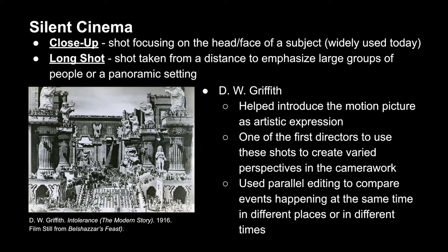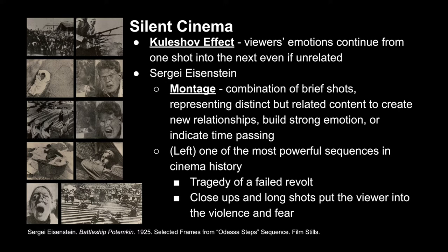Griffith also used parallel editing to compare events happening simultaneously in different places or at different times. Cinema relies on the fact that the viewer's emotions continue from one shot into the next even if they're seemingly unrelated — this is called the Kuleshov effect. Often this is used when shifting from a close-up to whatever the subject is looking at and then back, so that whatever they're looking at or doing informs the actor's emotions.